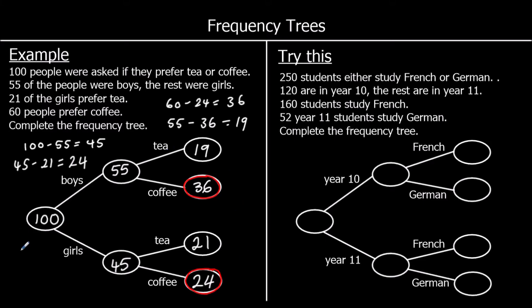Here's one for you to try. So give this one a go. We're told 250 students either study French or German. So we're going to start with 250. And 120 are in year 10. So 120 of them are in year 10. The rest of them are in year 11. 250 take away 120 is 130. So 130 year 11s.